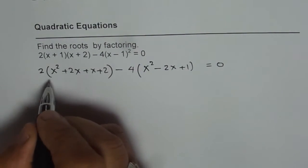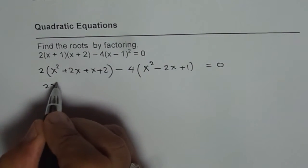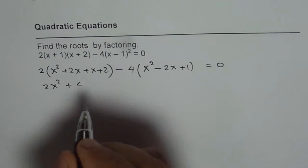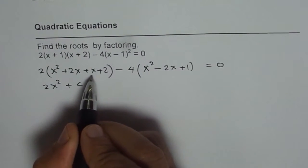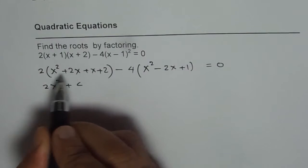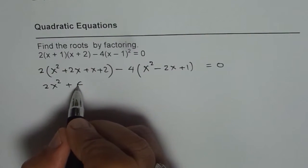So let us expand and simplify. We have 2x² plus 4x. Let me actually add them first. So 2 plus 1 is 3, 3 times 2 is 6. So let me write this as 6x.